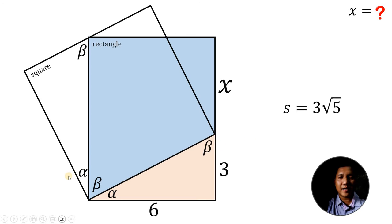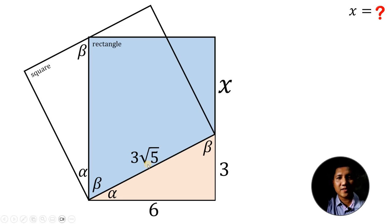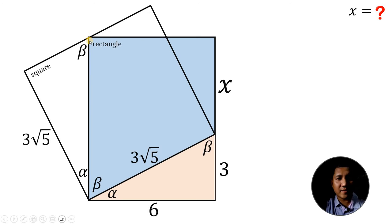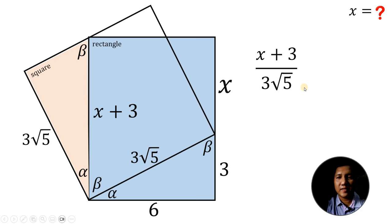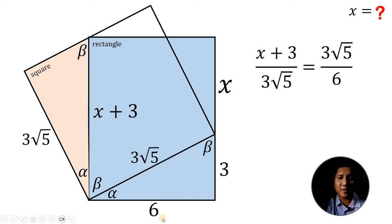Therefore, the side length of this square is 3√5. Since all sides of a square are equal, this side is also 3√5. Note that the length of this rectangle is x + 3. Considering the side triangle, the ratio of hypotenuse to longer leg gives us (x + 3) / (3√5). Since the two triangles are similar, this equals (3√5) / 6.